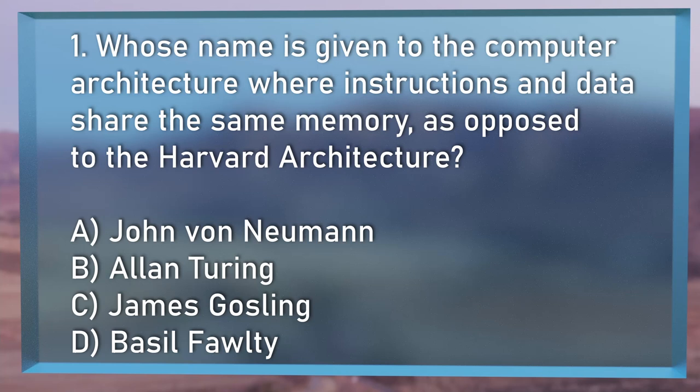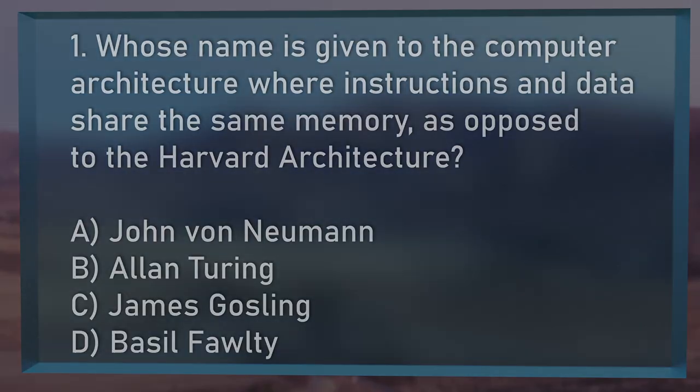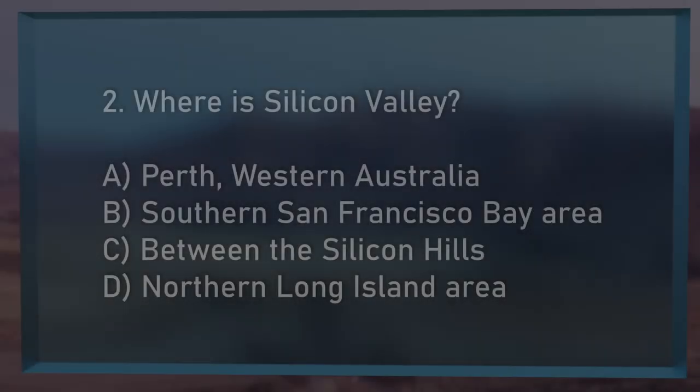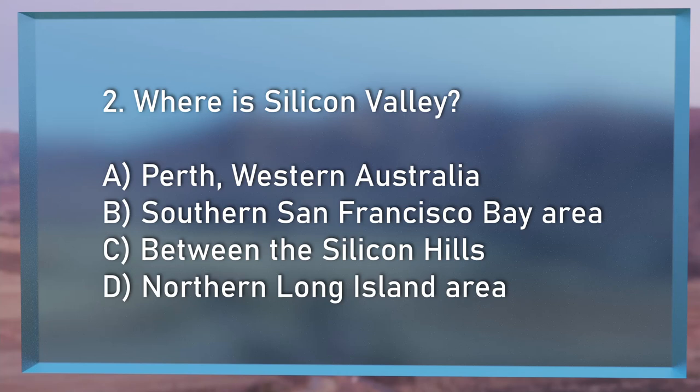Round 2, question 1: Whose name is given to the architecture of a modern computer where the instructions and data share the same memory, as opposed to the Harvard architecture? A, John von Neumann; B, Alan Turing; C, James Gosling; or D, Basil Fawlty?